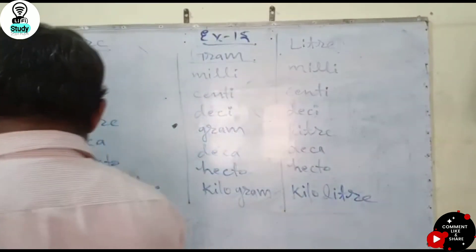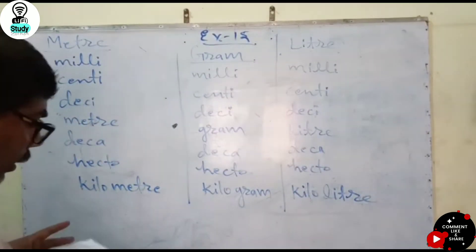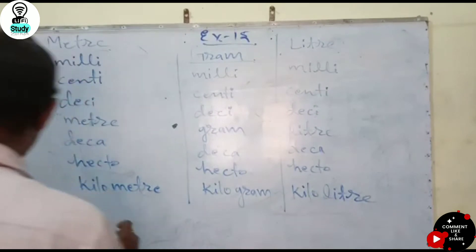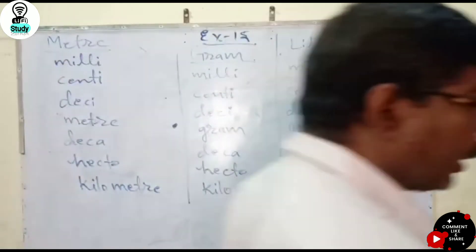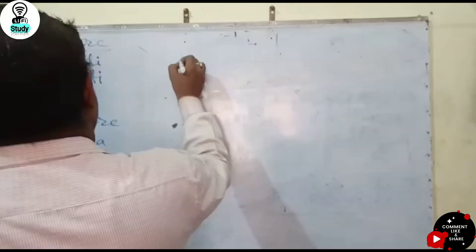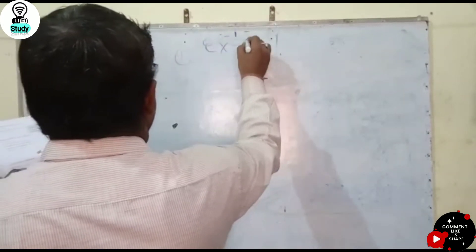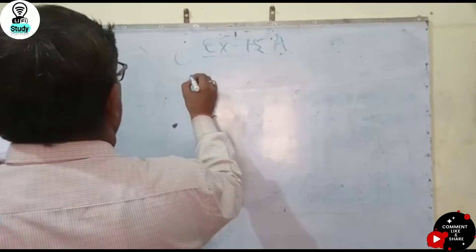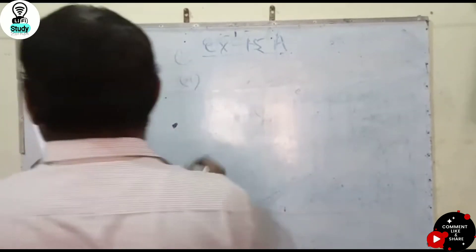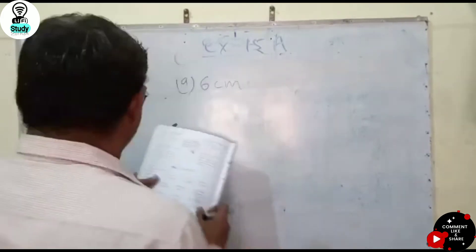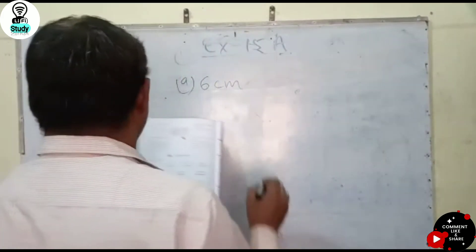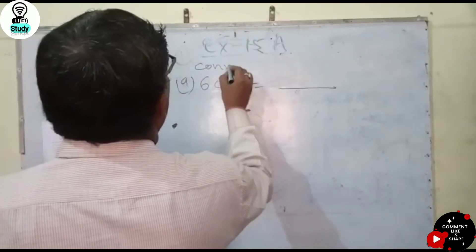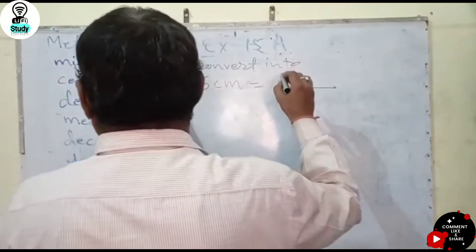Let me show you Exercise 15a. The question is: 6 centimeters equal to how many millimeters? Convert into millimeters.